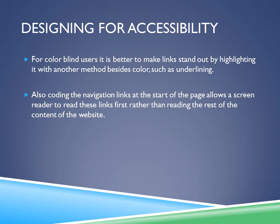Designing for Accessibility (continued). For colorblind users, it is better to make links stand out using a method other than color, such as underlining. Using different colors won't help things stand out for colorblind users. Also, coding navigation links at the start of the page allows the screen reader to read these links first. If navigation links are placed at the bottom of the page, the screen reader will have to read all the content near the top before reaching them.